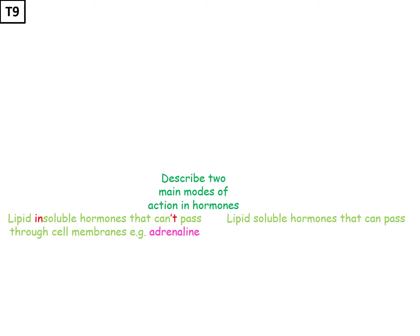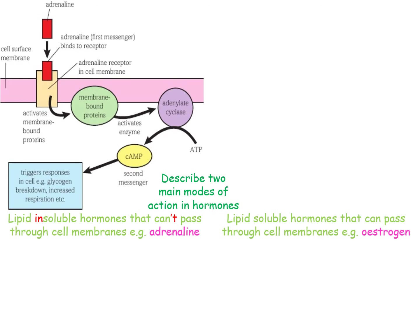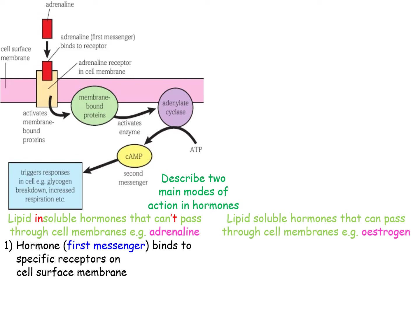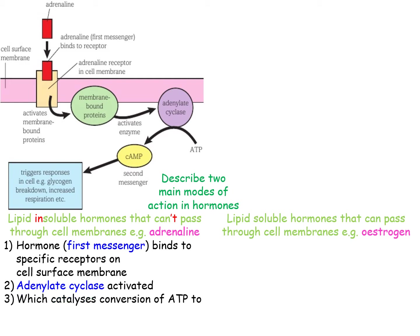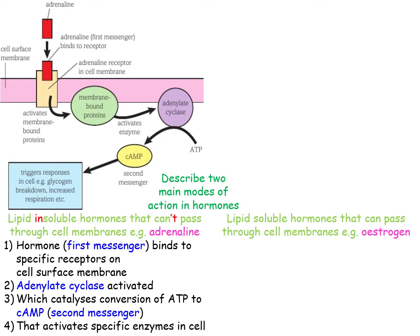Describing the two main modes of action of hormones: lipid-insoluble hormones cannot pass through cell membranes - an example is adrenaline. Lipid-soluble hormones, such as steroids like oestrogen, can pass through cell membranes. For adrenaline, the hormone acts as the first messenger, binding to specific receptors on the cell surface membrane. This activates adenylate cyclase, which catalyses the conversion of ATP to cAMP, the secondary messenger, which then activates specific enzymes in the cell to change its function.